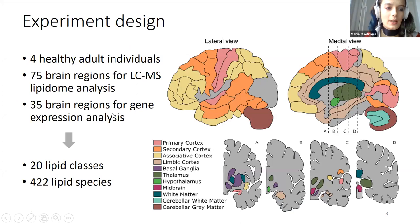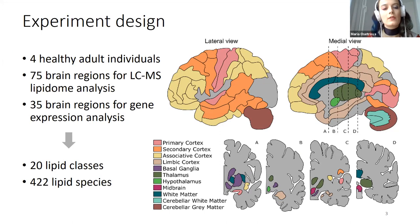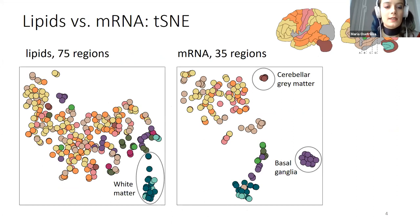Here's our experimental design. We dissected 75 anatomically distinct brain regions from brains of four healthy adult individuals. We extracted lipids and performed liquid chromatography coupled with mass spectrometry, which is the main method used for lipid analysis. In parallel, we did gene expression analysis for a subset of 35 brain regions from the same donors, and we were able to annotate about 400 different lipid species from 20 lipid classes.